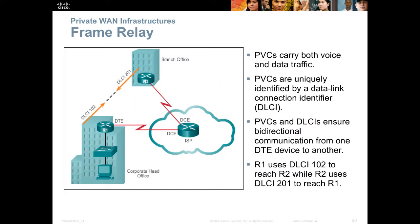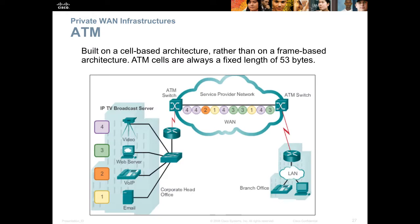Frame relay is another 1970s technology that's slowly — maybe fastly — going away. Frame relay is being replaced by other protocols like MPLS, but in a global sense it's still out there in many countries, and in rural areas frame relay may be your go-to technology. This is a circuit-switching technology. ATM is another older technology from the 1980s — it's a packet-switch technology designed for voice, video, and data, so it's designed for converged networks. Many ISPs continue to use ATM internally within their own networks but rarely sell it to customers anymore.